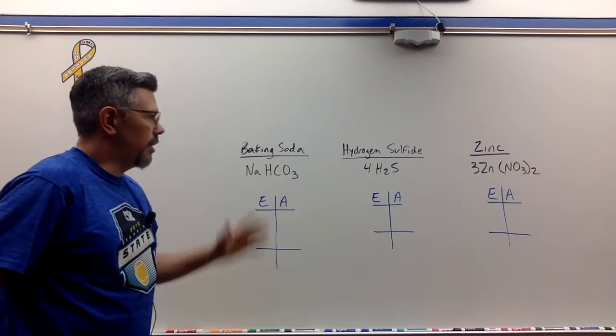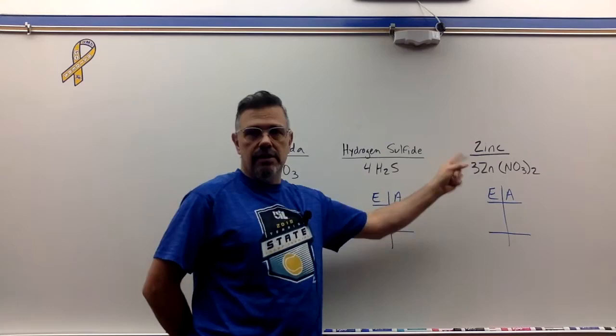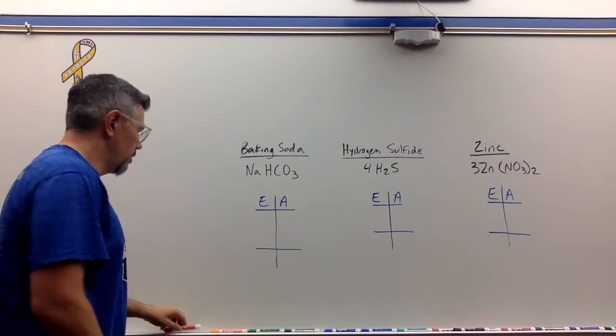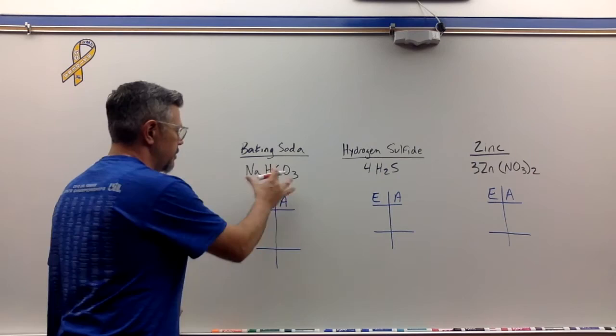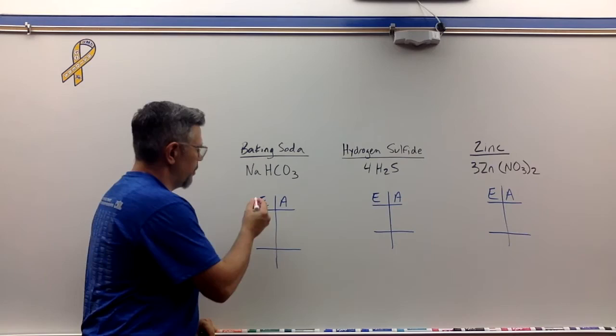We've got baking soda, hydrogen sulfide, and zinc. We are going to do elements and atoms and T-charts for all of those. So let's get started. The first thing you do, you just take a look at your formula and see what we're working with here. We have some elements we need to count.